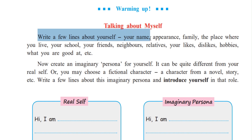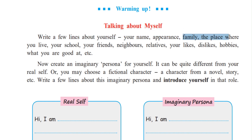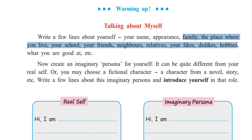In that you can introduce yourself — your name, your appearance, that is describe yourself, your physical appearance, how you look. Maybe the colour of your eyes, the colour of your hair. Anything you could describe, as well as a little about your family, the place where you live, your school, your friends, neighbours, relatives, your likes, dislikes, hobbies — what are you good at, etc. All these things you could mention when you are writing about yourself.